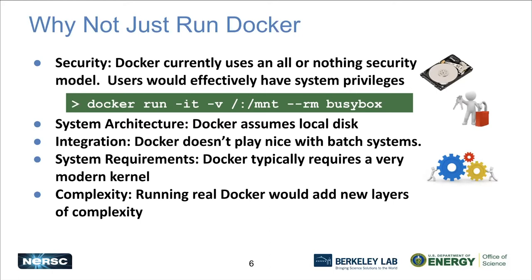Another issue is system architecture on our Cray systems. We don't have local disk and Docker kind of assumes that, which creates some barriers. We also wanted it to integrate and play nice with our resource management system, SLURM, and there are some mismatches there. There used to be a big problem with kernel requirements, but these days what we're running is modern enough. And then there's just complexity — it's another thing we would have to manage on the system.